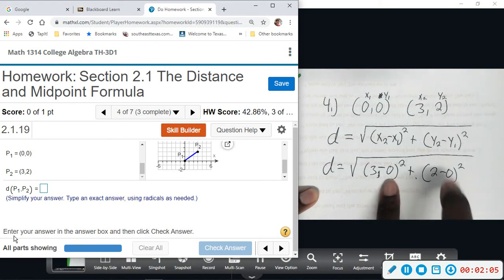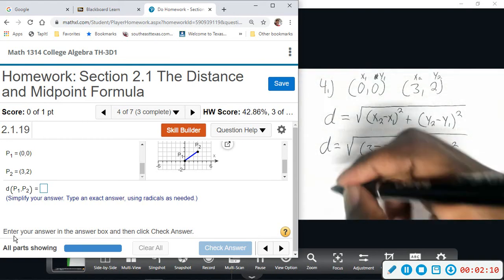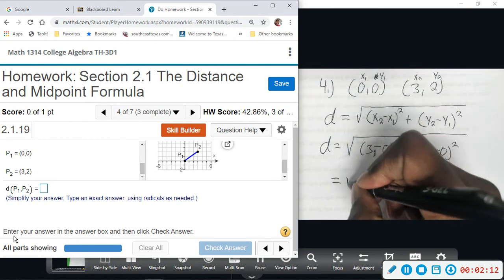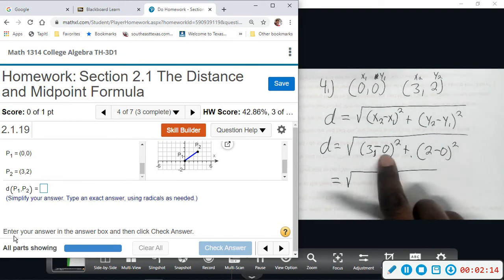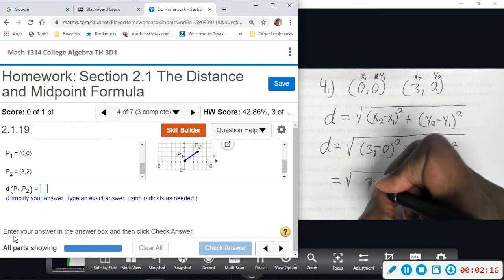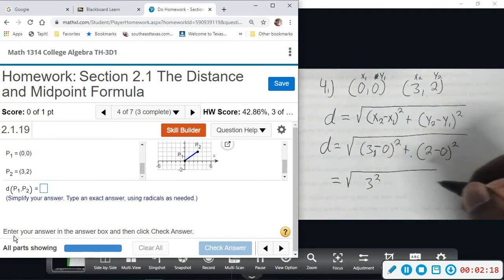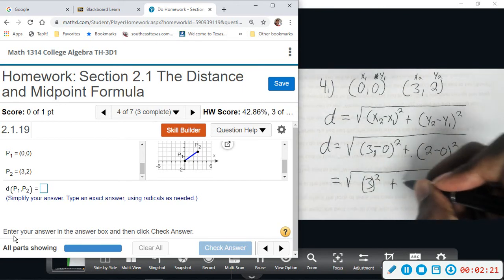When you're dealing with the origin, it's really nice. You get these zeros and some nice numbers. So continuing, we get the square root. 3 minus 0 is 3, so we're looking at 3 squared plus 2 squared.